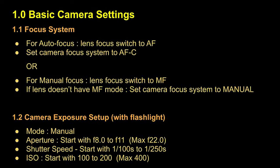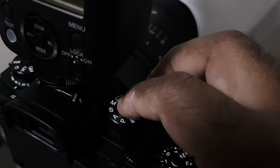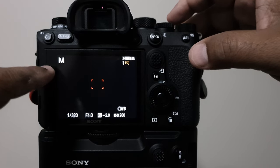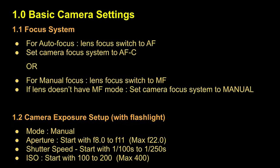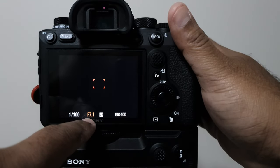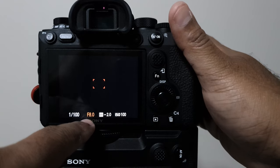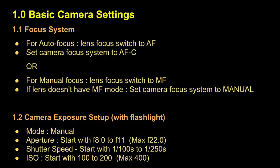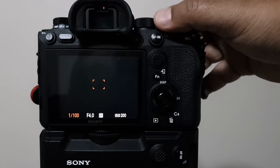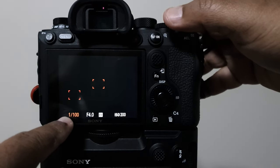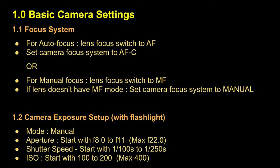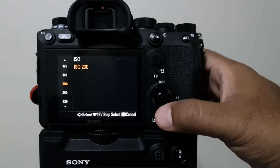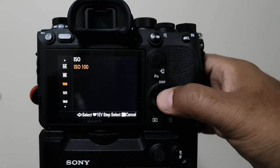Then we will move to camera exposure setup for macro photography, assuming you are using flashlight all the time. Camera mode: set to manual. Aperture: start with F8 to F11. If you want, you can go up to F22, but you will face some issues with narrow apertures — we will talk about this later in the video. Shutter speed: start with 1/100 of a second and go up to 1/250th of a second. ISO: start with 100 to 200, and if needed, go up to 400.